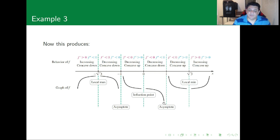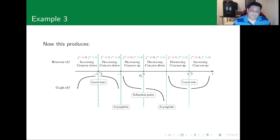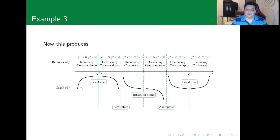Notice that -1 and 1 give the impression of being inflection points, and they are in terms of concavity change, but since they are asymptotes that's why the change occurs. At x = 0 we can clearly see the function changing from concave up to concave down. We have a local maximum at -√3 and a local minimum at √3.